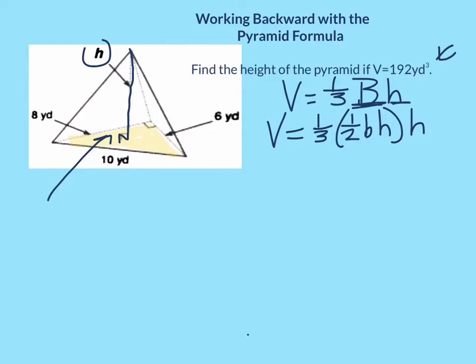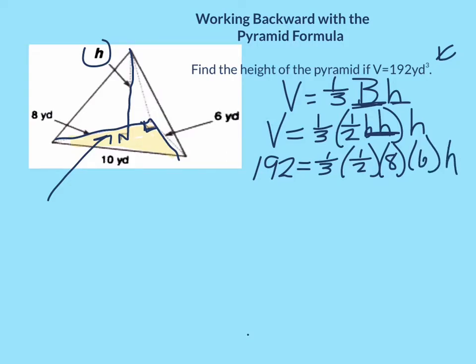So now just do your substitution step. We know our volume is 192. You're going to keep your one-third times one-half. Now this little bh right here are the legs of your right triangle. You know they're the base and the height because of this right angle right there. So times 8 times 6, and what we're actually looking for is the h.